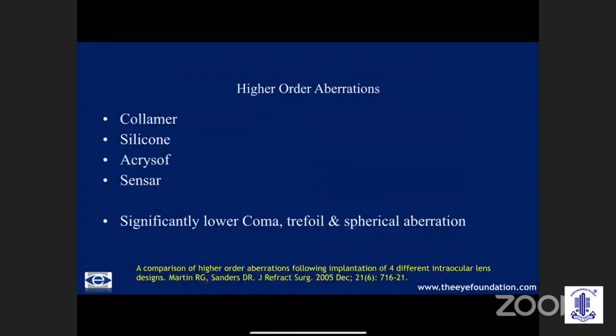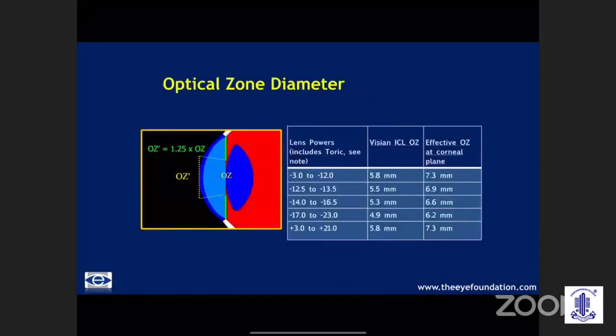The higher-order aberrations are significantly lower as compared to other implants including silicon, acrylic, and the sensor lenses. One of the most important advantages is an enlargement of the optic zone on the cornea. The effective optic zone is 1.25 times the optic zone of the lens, meaning that while treating powers of up to 13.5 diopters, we can give the patient an optic zone of 7mm or greater, which is not possible with any corneal-based procedure.